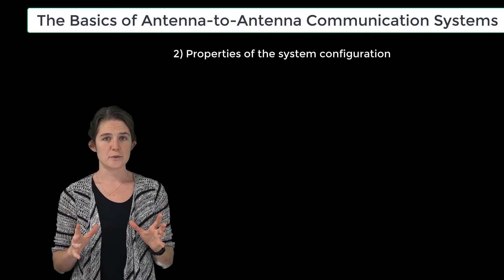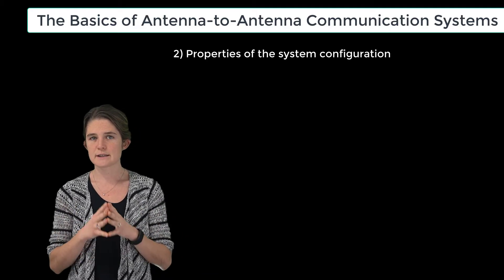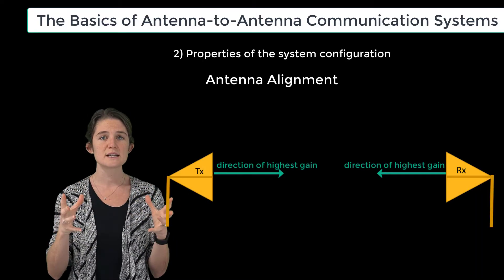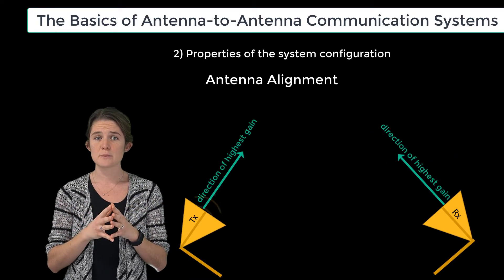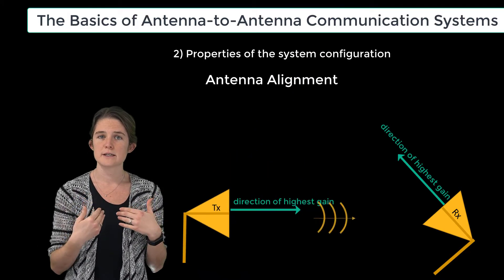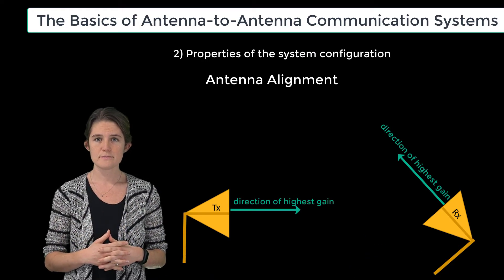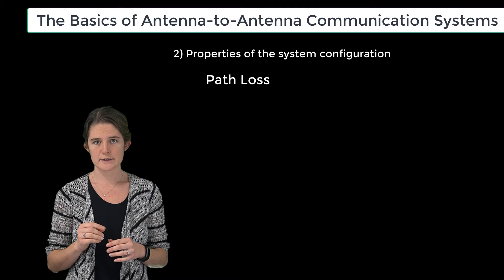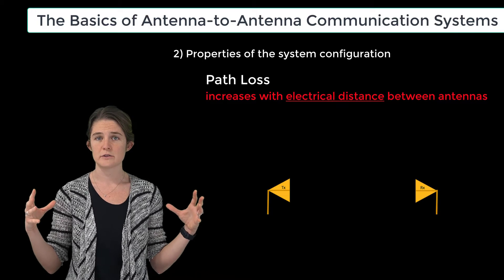The second consideration when looking at a two-antenna system is properties of the system configuration. For instance, consider the importance of antenna alignment — each antenna should be oriented so that its direction of maximum gain is pointing toward the other antenna. If they are not properly aligned, large amounts of power may radiate in the wrong direction or reflect off the receive antenna without entering it; in either case this appears as system loss. Another factor is path loss: the further apart the two antennas are, the more the wave will be attenuated as it travels between them.